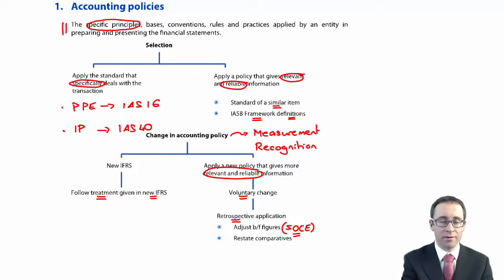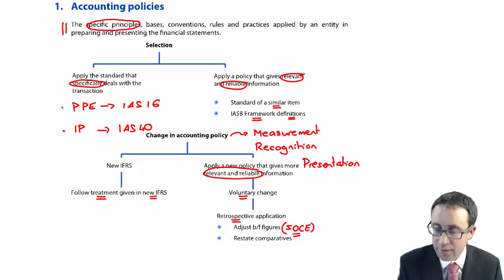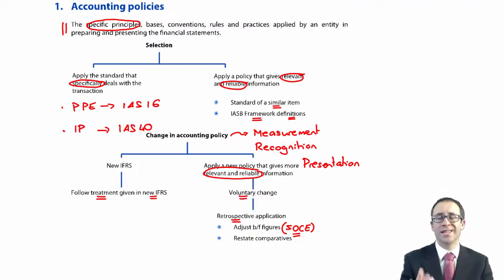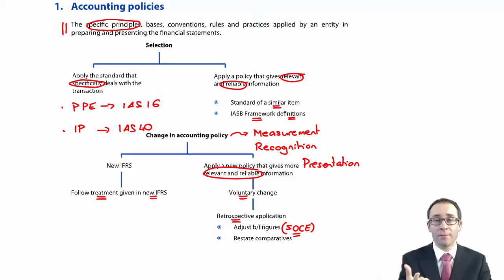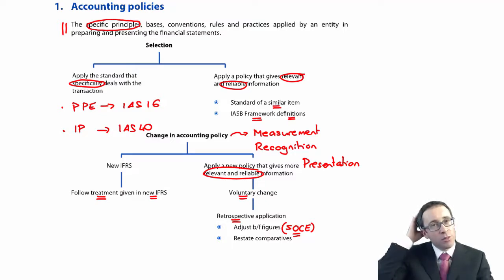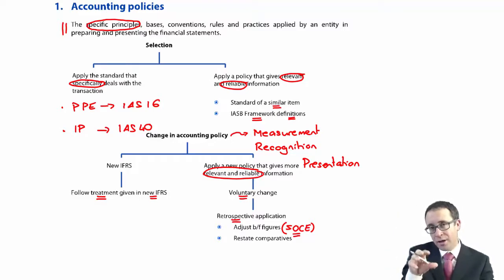You also need to consider whether there is a change in presentation — for example, did you previously present an expense in cost of sales and now present it in admin or distribution, or vice versa? When you apply retrospective application, you restate the comparatives. But in the case of a change in presentation, there will be no adjustment to retained earnings, because you're just moving an expense within your profit or loss account — not changing the overall profit figure.